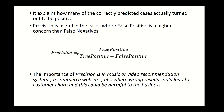Precision tells you how many of the correctly predicted cases actually turned out to be positive. True positive means predicted positive and it is true — these are the correctly predicted cases. So precision is: true positive divided by true positive plus false positive.